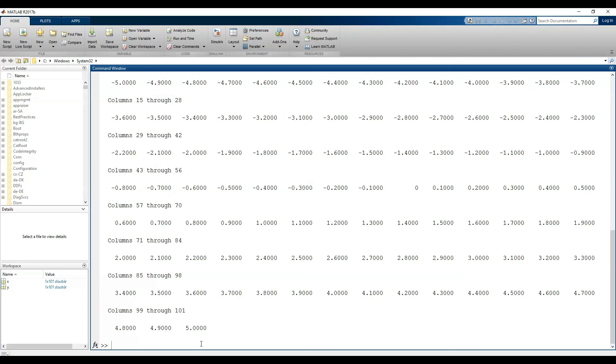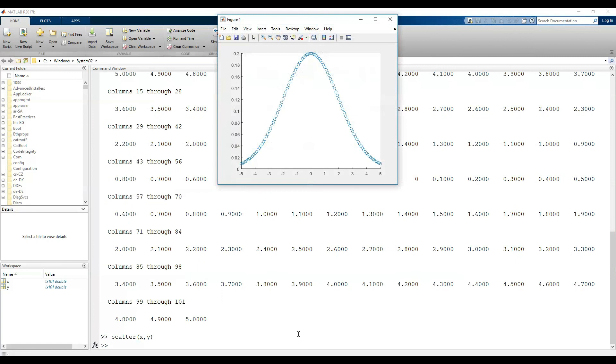With the scatter function, we can see the data and the probability density value. As it is clear, the data are separated points and they look like a ring bell.